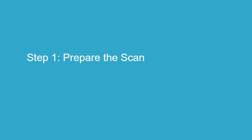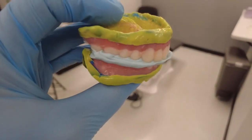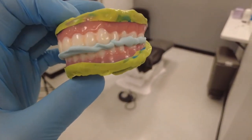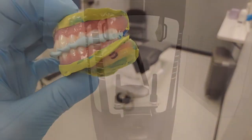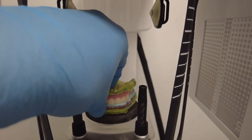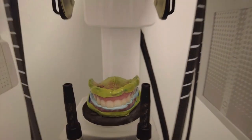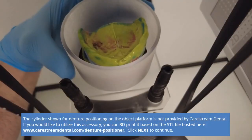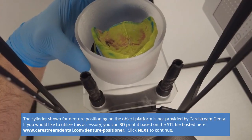Step 1: Prepare the Scan. To begin, ensure the denture is ready for scanning. Trim any excess impression or bite material. Place the denture, model, or wax rims on the scanning pad. The position is the same regardless of the scanning equipment you are using. Use the 3D printed cylinder for centering. If necessary, flip the mandibular denture upside down for balance.